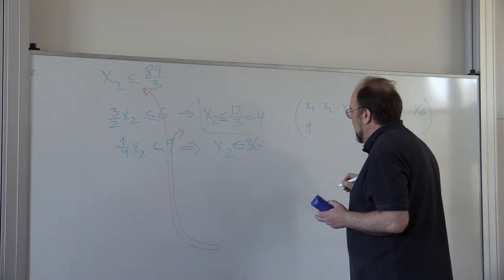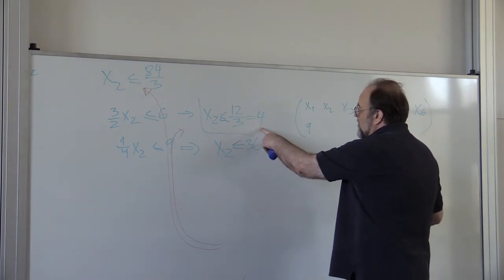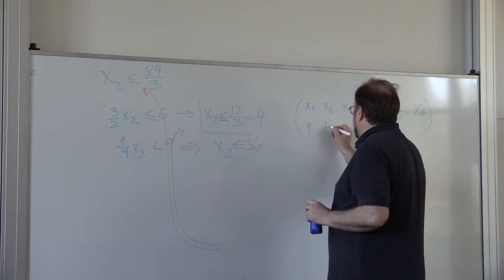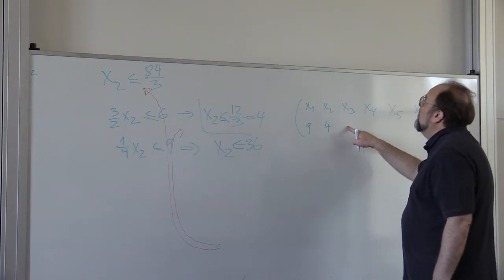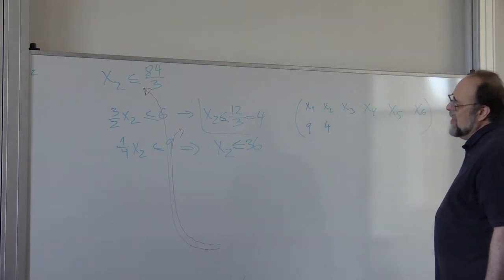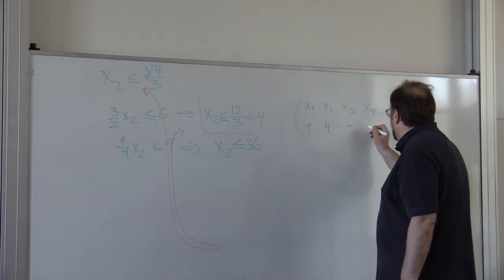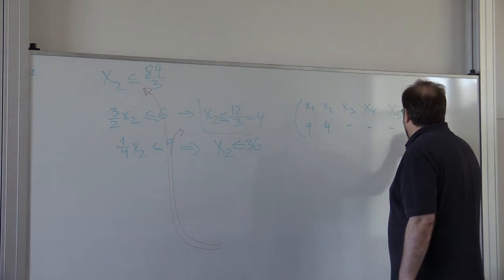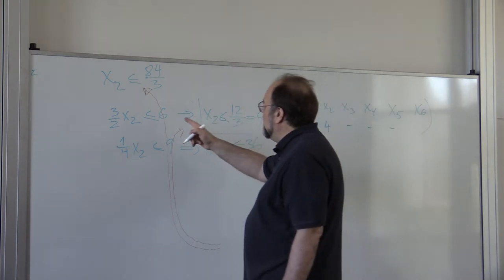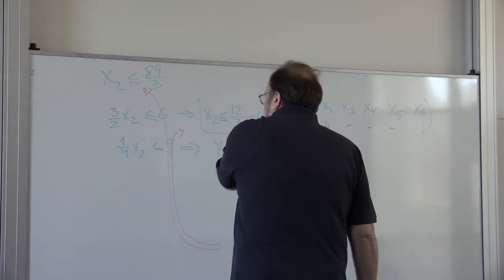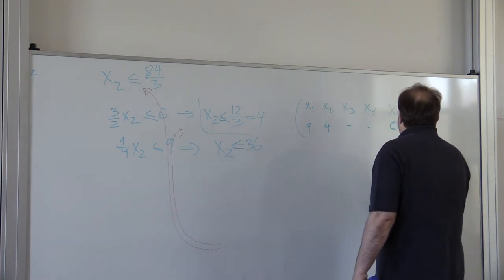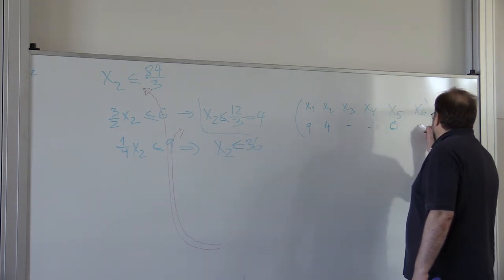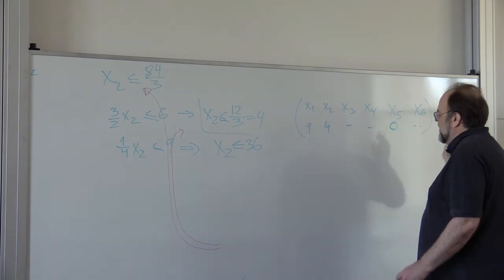x1 was 9. We will push x2 as much as we can. This will become 4. And now we can compute from the equations that I just erased. You can compute what x4, x5 will be. And because this 4 comes from the third equation, x5 will become 0.